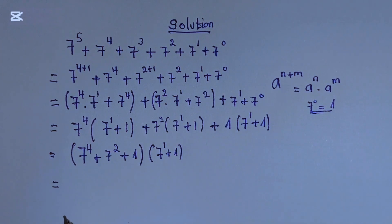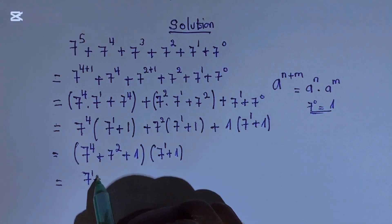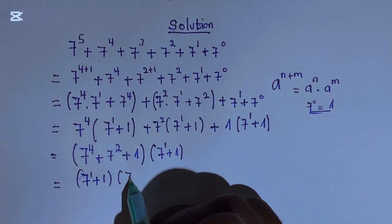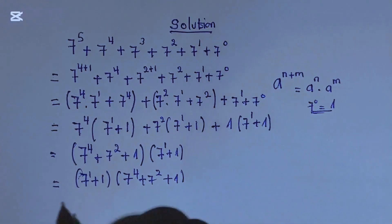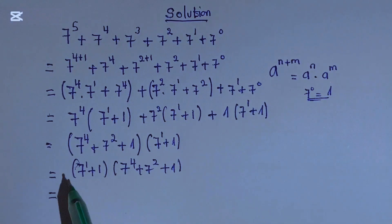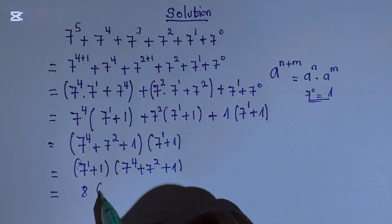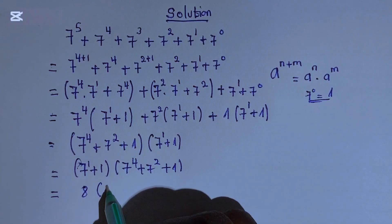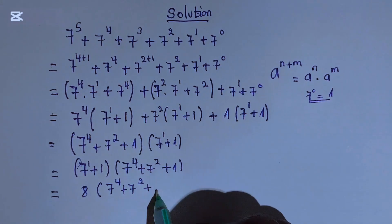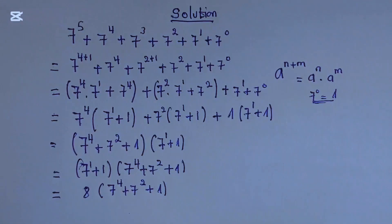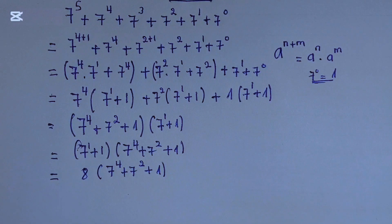Okay, here we can say this 7 to the power of 1 plus 1 can be written as: 7 to the power of 1 is equal to 7, plus 1 equals 8. So this will be equal to 8, then 7 to the power of 4 plus 7 squared, then plus 1. Remember that for this question, no calculator is allowed.